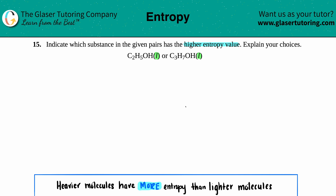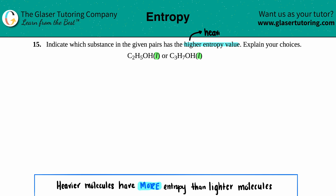Since they're both liquids, you can't differentiate entropy based on state. So we look at the actual compounds: C₂H₅OH versus C₃H₇OH. The reasoning here is that heavier molecules always have more entropy than lighter ones. So we're looking for the heavier molecule, and we'll use the periodic table to find the molar mass of each.